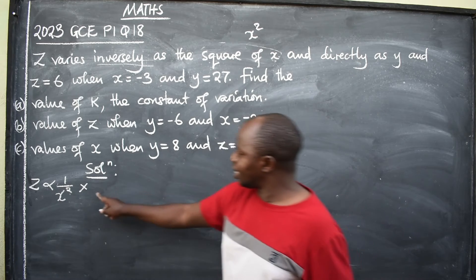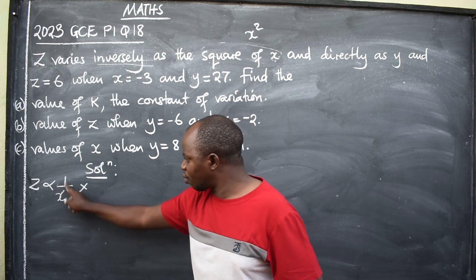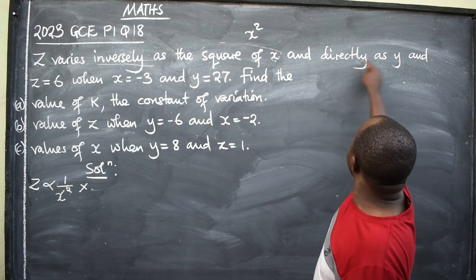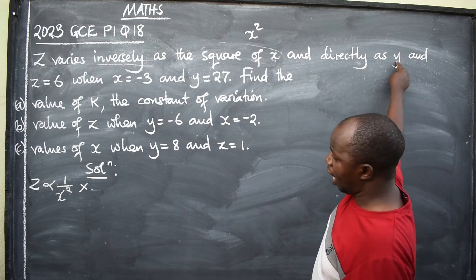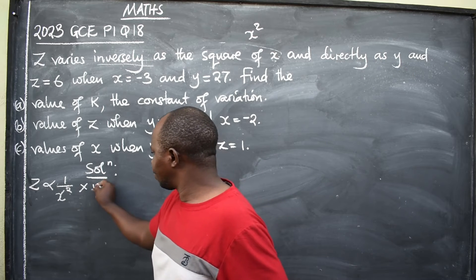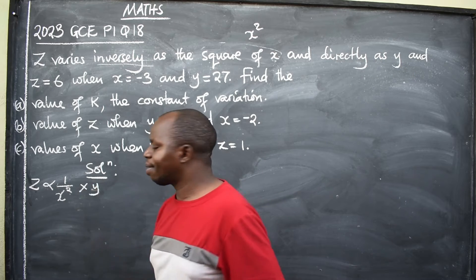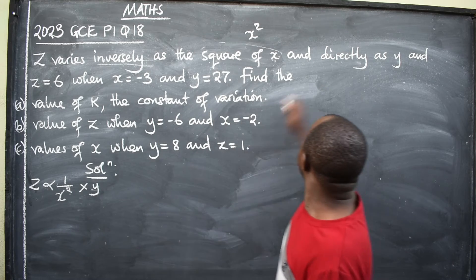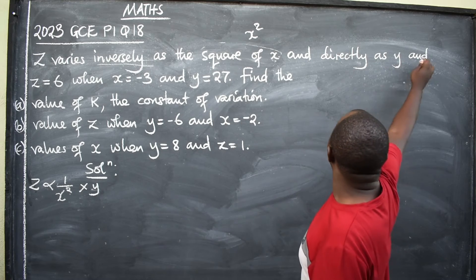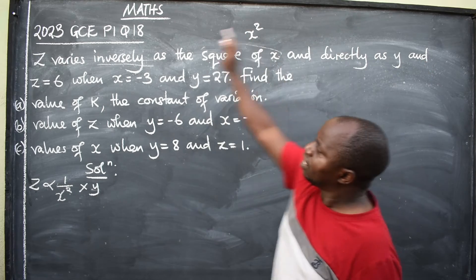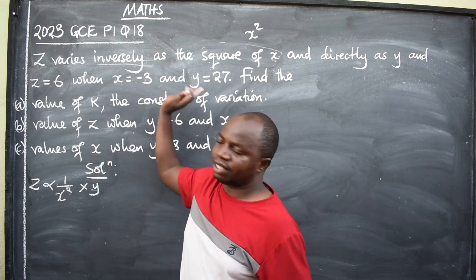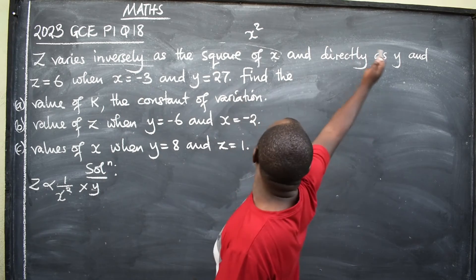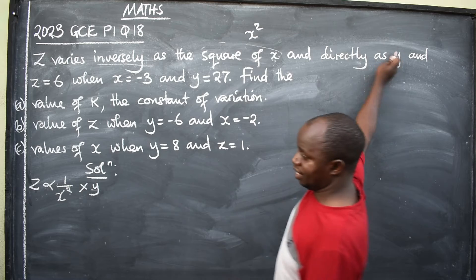And directly as Y — for 'directly,' there is no one over. We write Y in the numerator. So we multiply by Y. The full translation reads: Z is proportional to Y over X squared. This is where the translation ends.